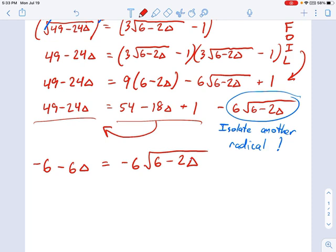So negative 6 minus 6 delta equals negative 6 times square root of 6 minus 2 delta. So this is a treat, right, I have negative 6's everywhere. I can just divide both sides of the equation by negative 6 to help isolate the radical on the right side, and this is going to be equal to square root of 6 minus 2 delta, and the left side is going to be equal to 1 plus delta. Okay, not so bad.